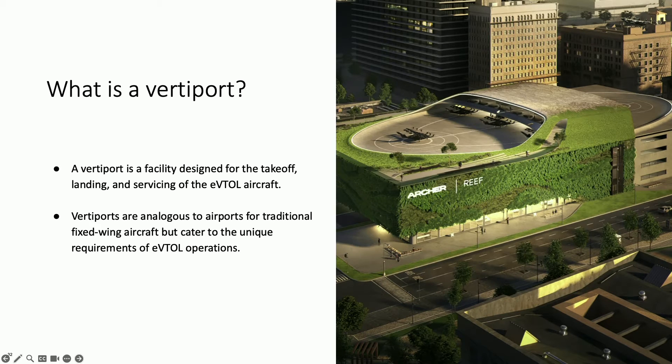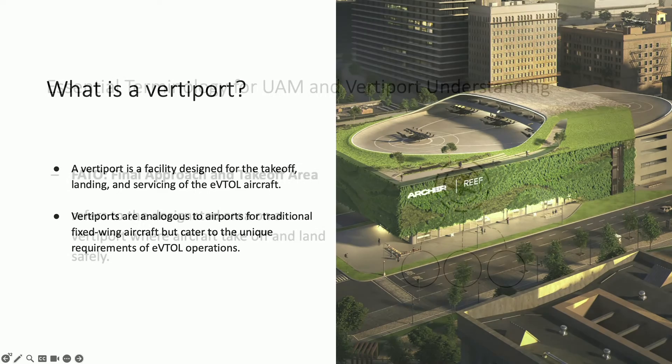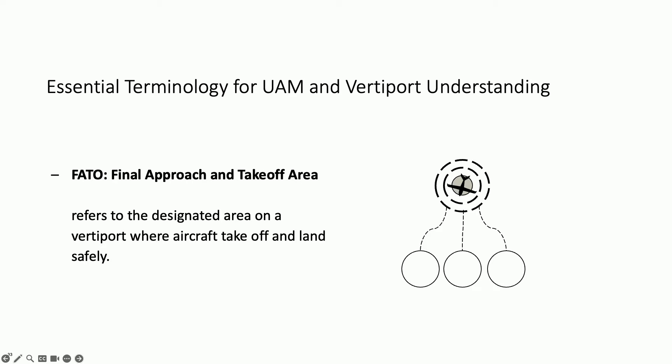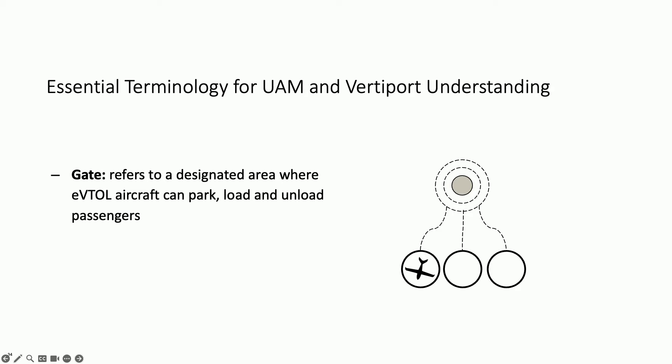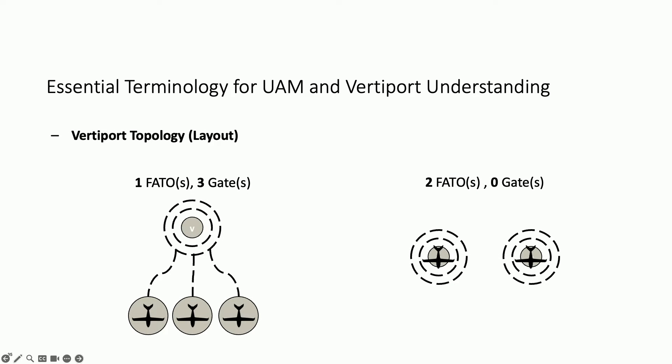This is an example of what we envision our vertiports to look like. Before I go into the model, I want to set the stage with some terminology. You're going to hear me talk about FATO — that stands for Final Approach and Takeoff Area. This is basically the area where the aircraft will land in the vertiport — think of it as a runway. The other term is gates: these are where aircraft will park, get serviced, passengers will board, and where we will charge the aircraft.